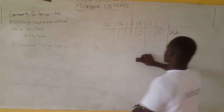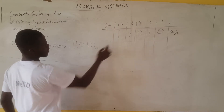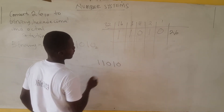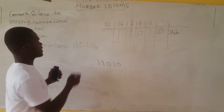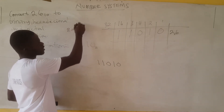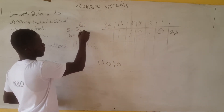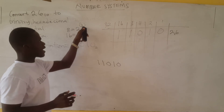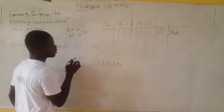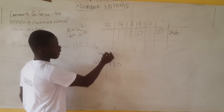Let's first convert to octal. The number in binary is 1, 1, 0, 1, 0. For octal, which is base 8 — written as 2 to the exponent 3 — we create groups of 3 digits. So we get groups: 1 | 1, 0, 1 | 0. Since there's no third number in the first group, we put 0 there, giving us 0, 1 | 1, 0, 1 | 1, 0.